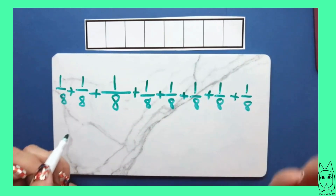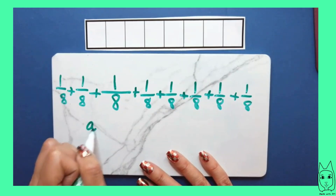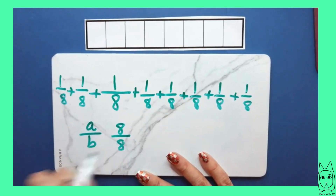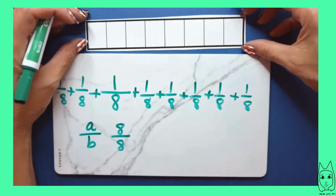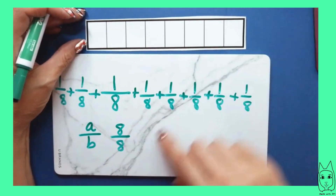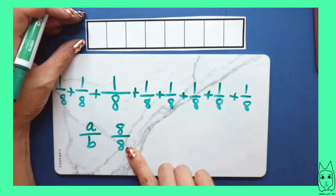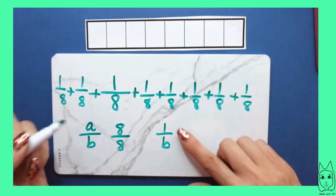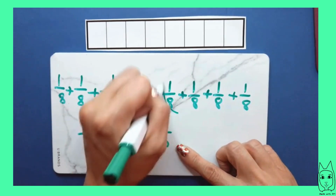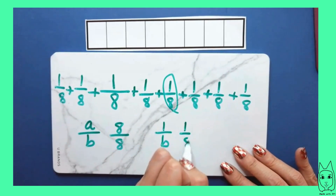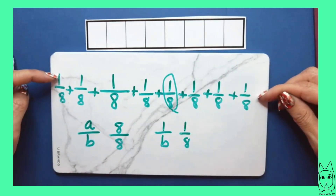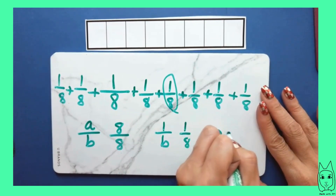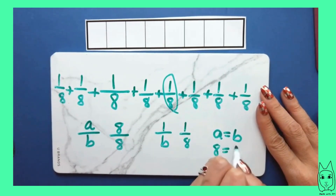So in our example, when the standard says a over b, in this case I'm talking about eight over eight — the whole rectangle. I have eight parts out of the eight I need to make a whole. The one over b is our unit fraction, so this is my unit fraction one eighth. Here's my sum — the sum of unit fractions to make that fraction. In this case, a equals b, the numerator was the same as the denominator.